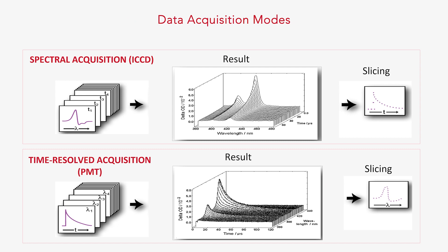The ICCD detector in the LP980 allows acquiring the full transient absorption spectrum in one laser shot. The spectrum corresponds to a single delay after the pump pulse. Conversely, the PMT detector provides a full kinetic decay in one laser shot, acquired at one wavelength only. Both detectors can provide spectral or kinetic information by acquiring time or wavelength maps and then slicing the data.